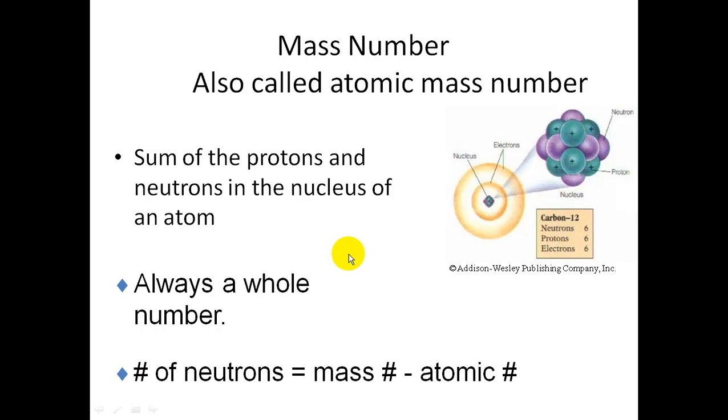And it allows us to give an equation to calculate the number of neutrons. The number of neutrons equals the mass number minus the atomic number.